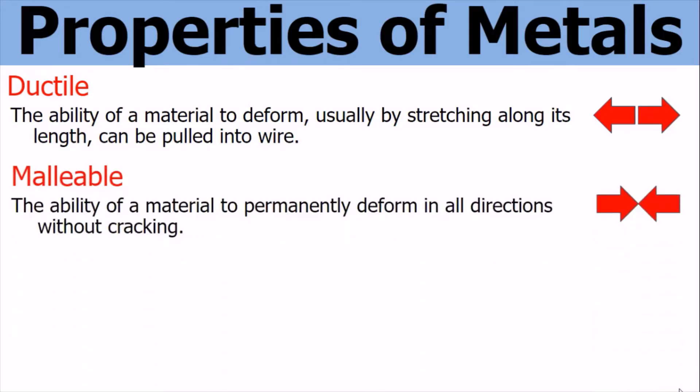Malleable. This is the ability of a metal to permanently deform in all directions without cracking. So metals that can be bent or pressed into shape are malleable.